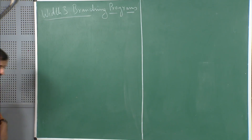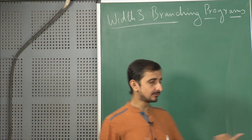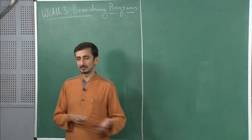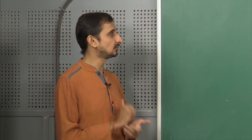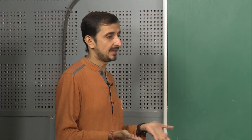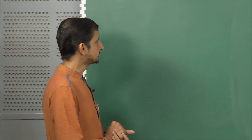Like last time, we are going to look at the instruction model of branching programs. We saw that given a sequence of instructions, we can convert it into a branching program of the same length. Instructions over S5 basically correspond to a branching program of width-5. We are going to look at instructions over S3 instead.